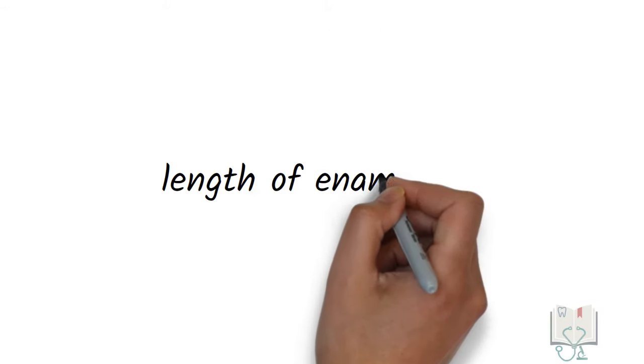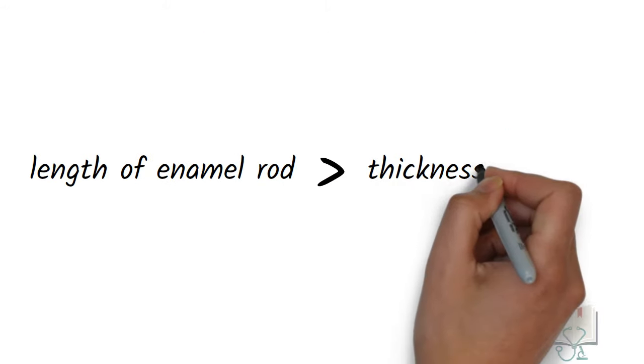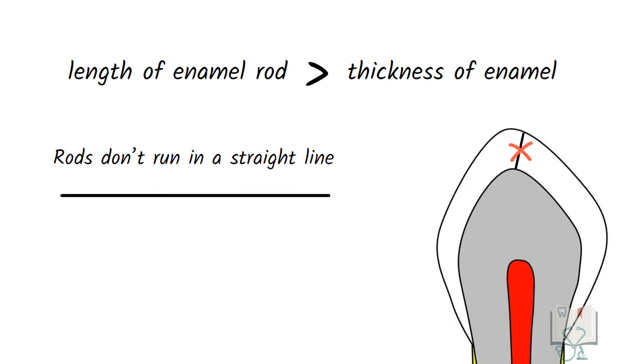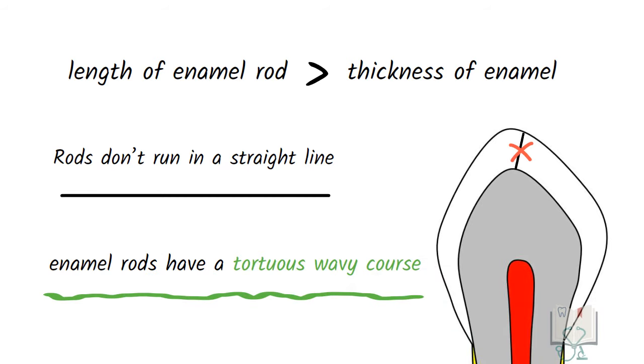But the actual length of each rod is more than the thickness of the enamel. This is because enamel rods don't have a straight course but have a tortuous wavy course. So the individual length becomes longer than the enamel thickness.